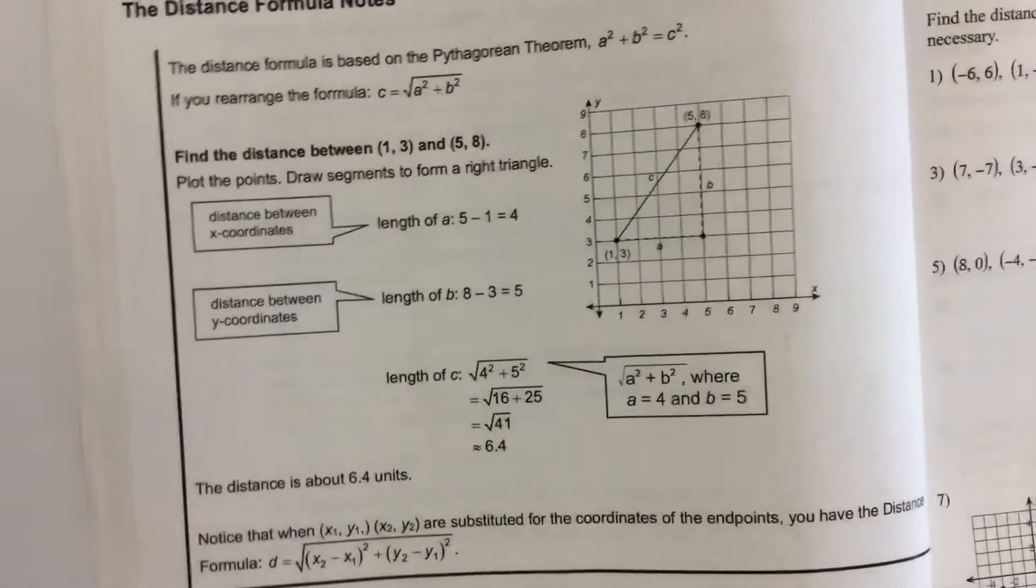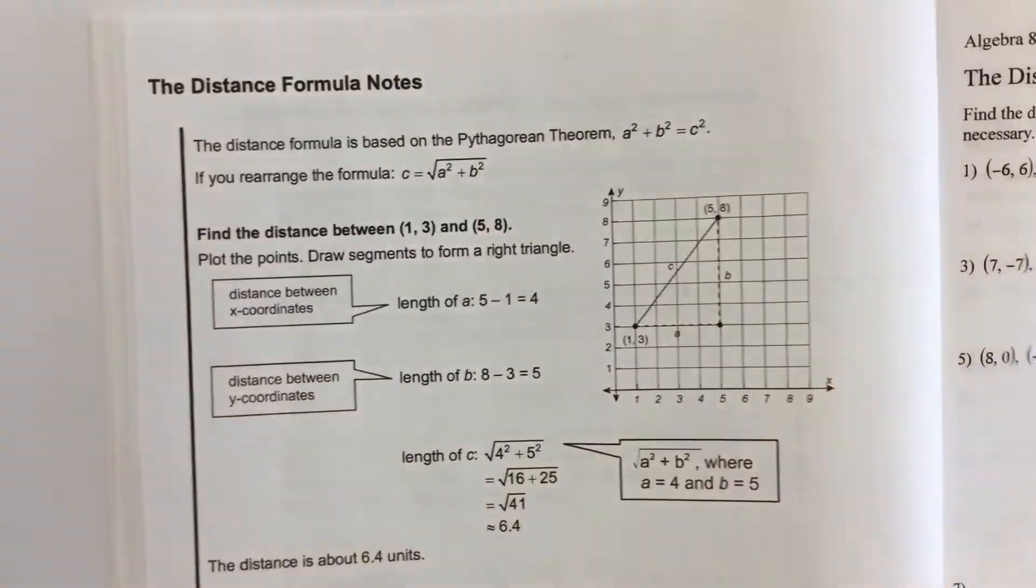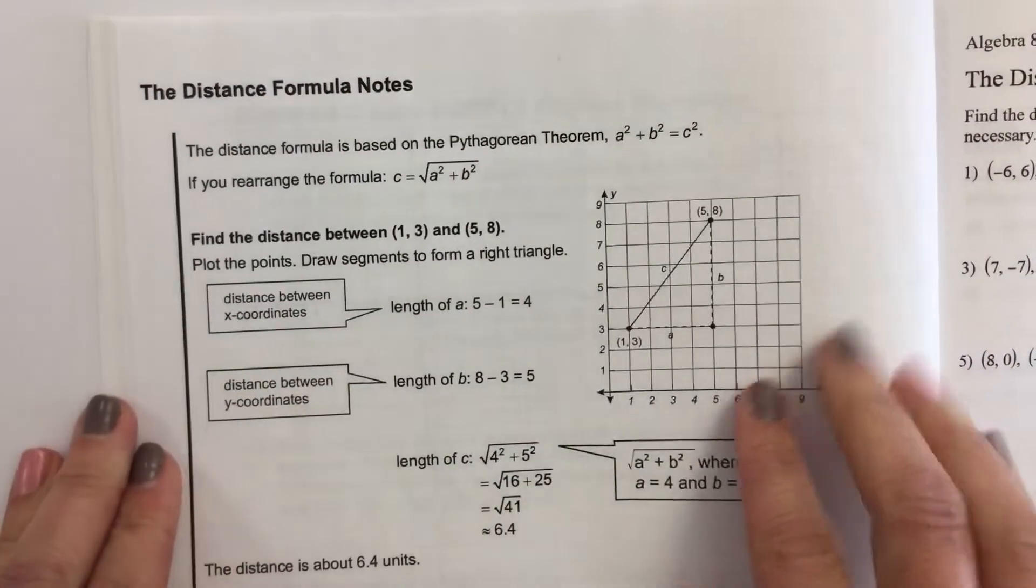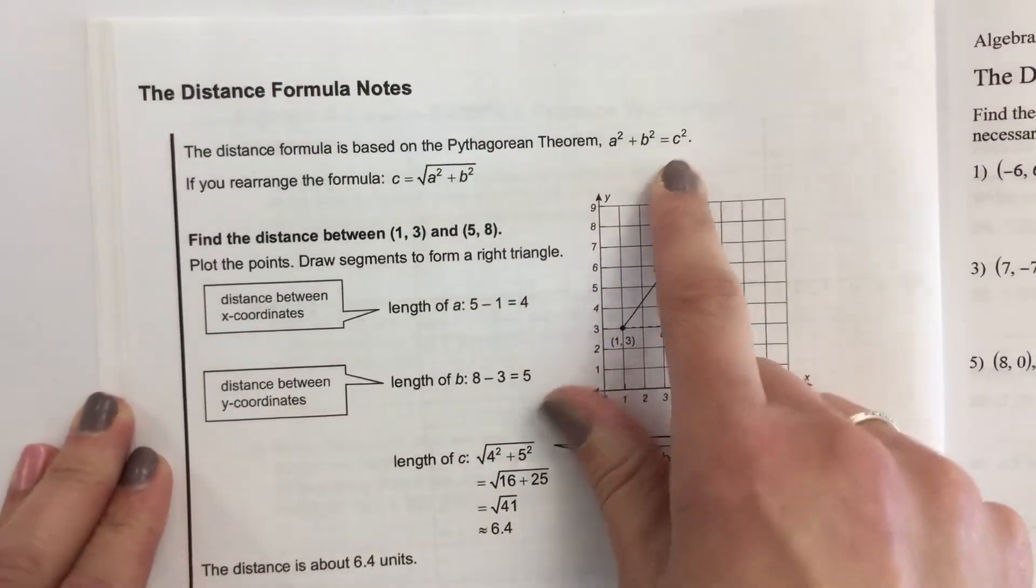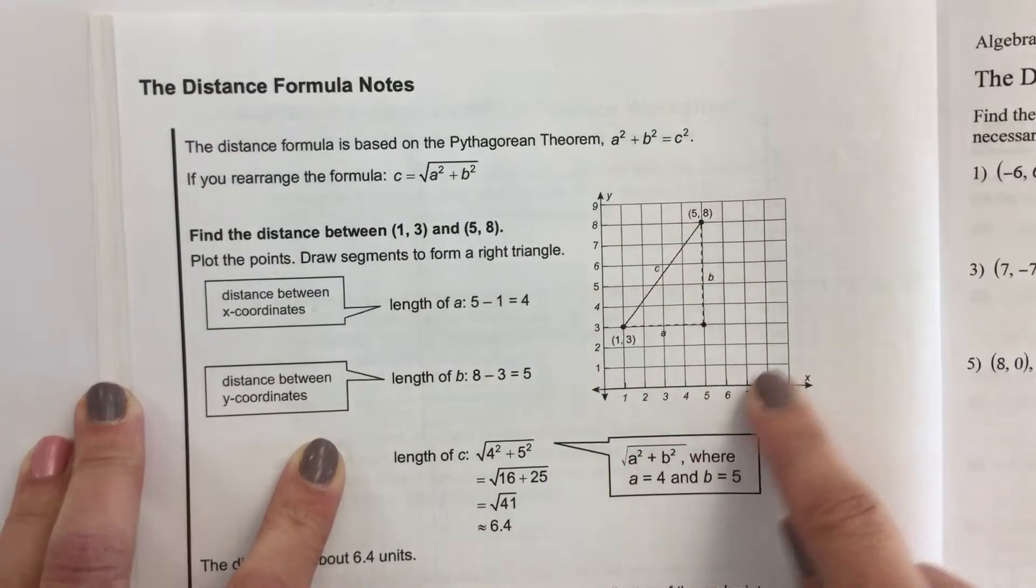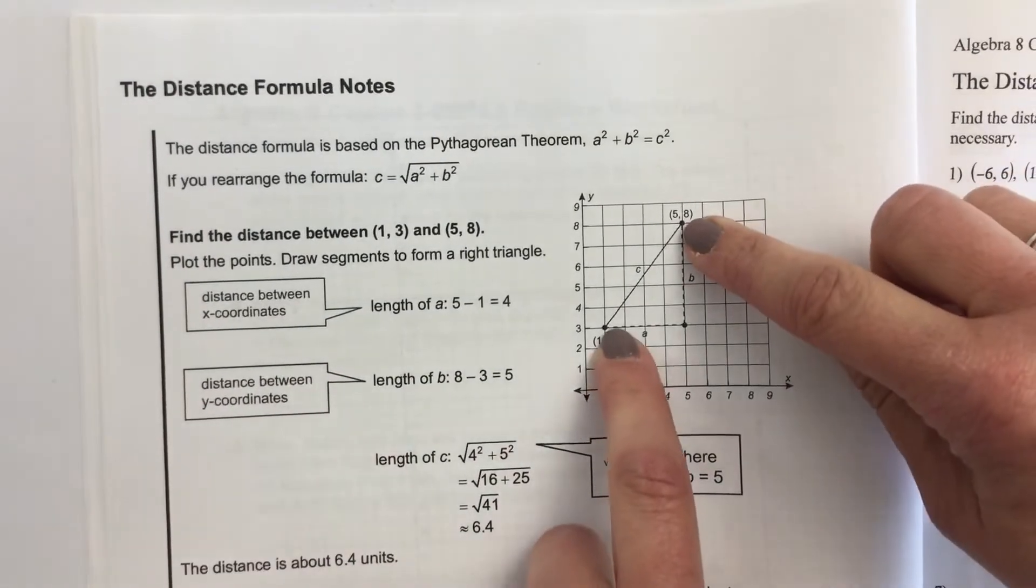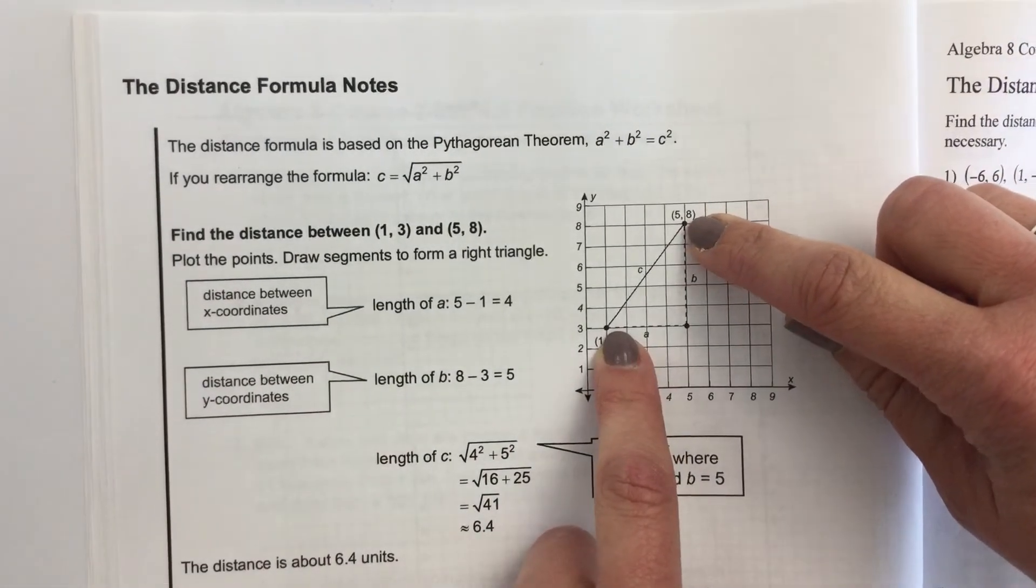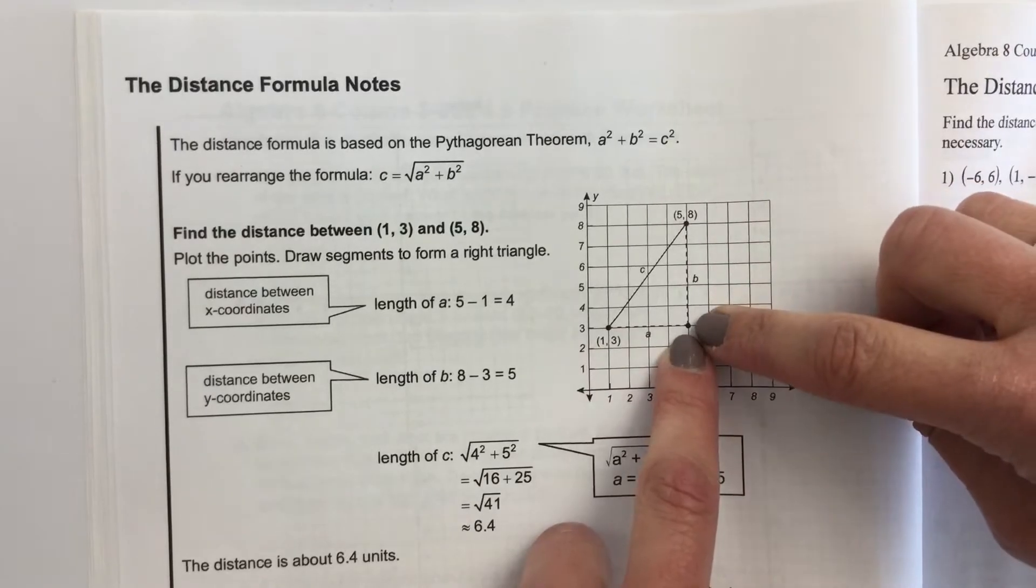The distance formula is this really neat formula and actually plays off the Pythagorean Theorem. When you look at a coordinate grid, the distance between two points can actually be found by using the Pythagorean Theorem.